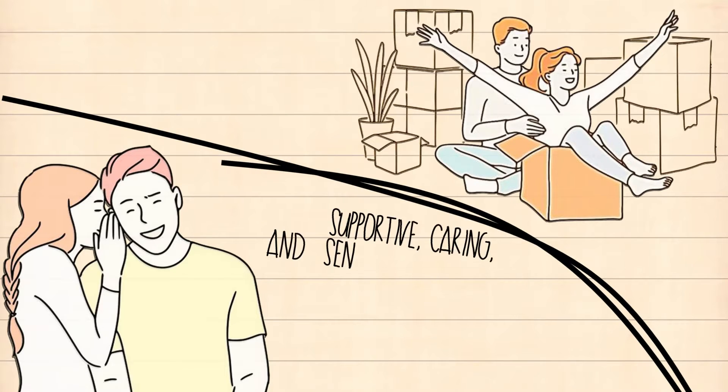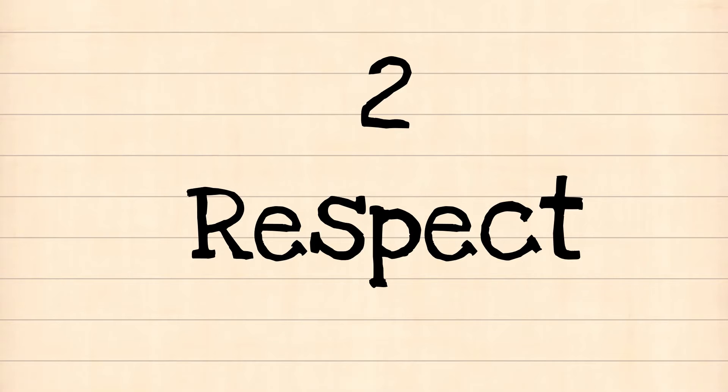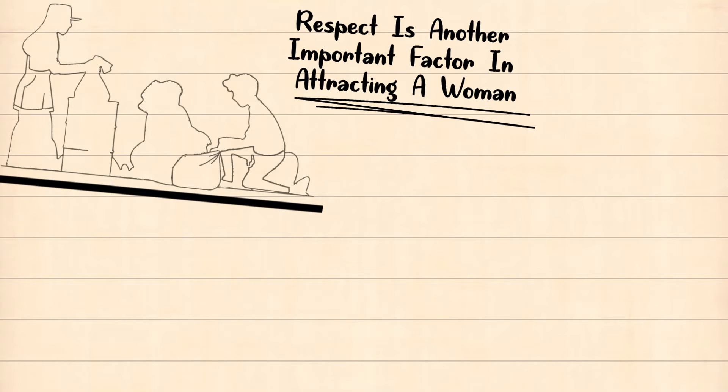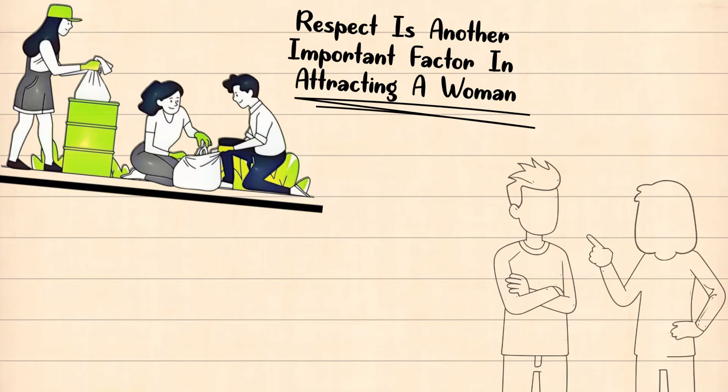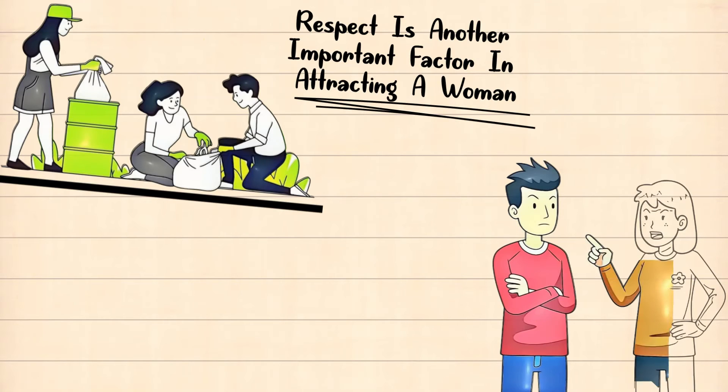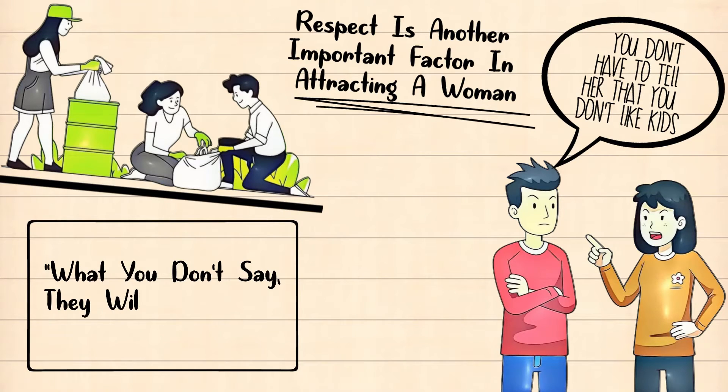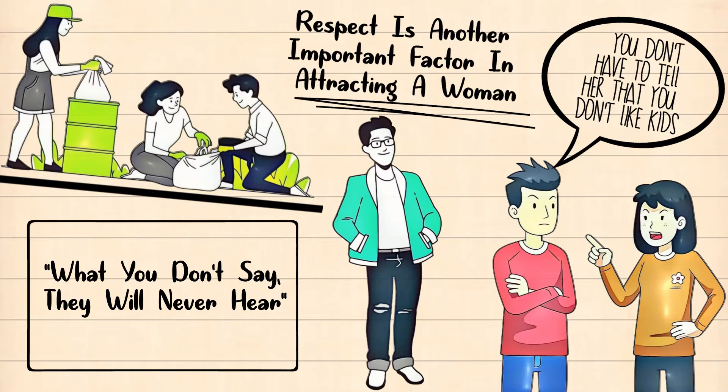Two: Respect. Respect is another important factor in attracting a woman. Women would appreciate a man who has high regard for other people. If you respect other people, especially women, then you're sending the message that you're someone she can trust. Let's say she's talking to you and you said, 'Oh, I don't really like kids.' What do you think she would feel about you? Of course, she would feel offended. You don't have to tell her that you don't like kids. There's an old saying that goes: what you don't say, they will never hear. What you just have to do is show her that you're not like the other men, and you'll be liked for that.